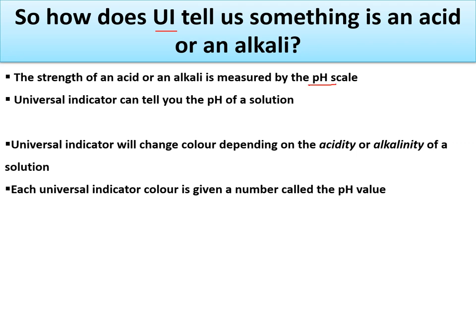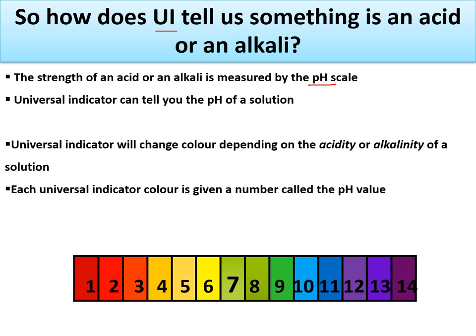Those colors are telling you about the pH scale. Just like we measure length in meters or centimeters, and time in seconds or hours, the pH scale measures whether something is acidic or alkaline. You've seen this before — it shows a range of pretty colors, but they're not random. They tell you what something is: acid, alkali, strongly acid, or strongly alkali.